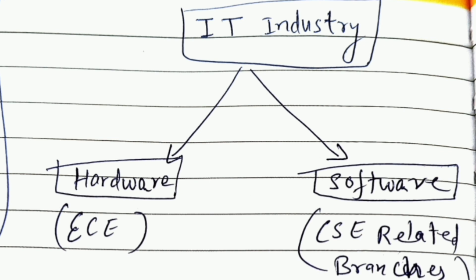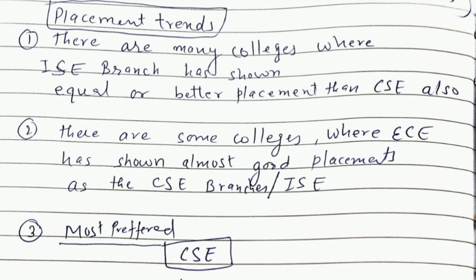To understand the IT industry, it is part of two things: one is the hardware part and the other is software. There are a lot of questions students ask — if I take EC, can I go to the IT industry? Yes, you can. EC is basically where you are taught the hardware part of IT, and CSE and related branches are where you are taught the software part. Both are very important and all companies operating in this area have professionals from all these streams.